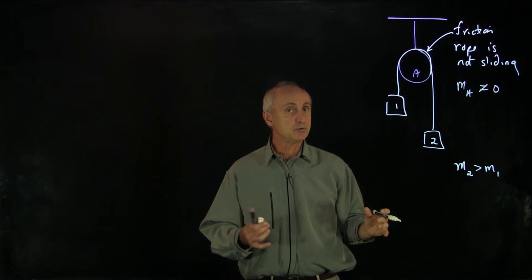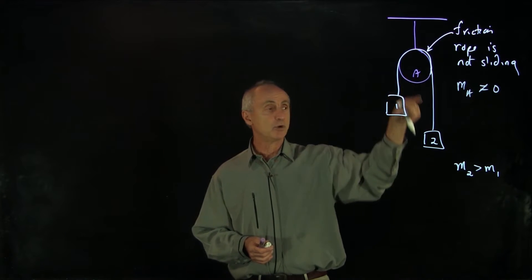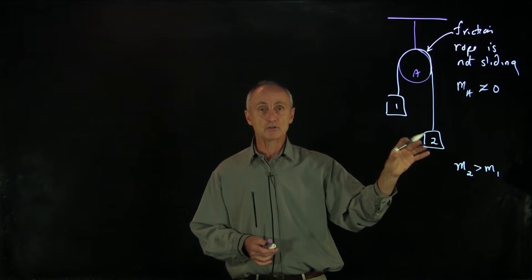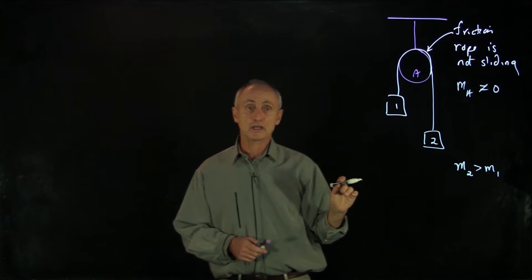What we'd like to do is to identify our three objects: mass one, the pulley, and mass two. For mass one and mass two, use Newton's second law. For the pulley, we'll use our torque relationships.